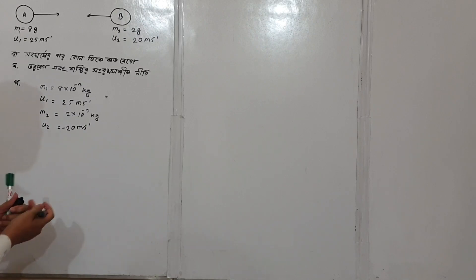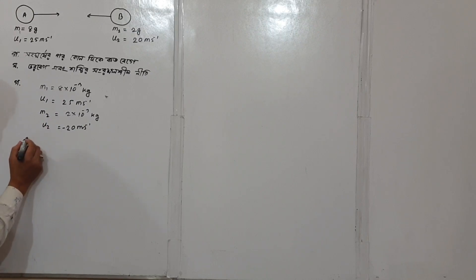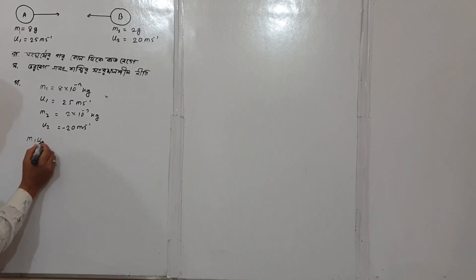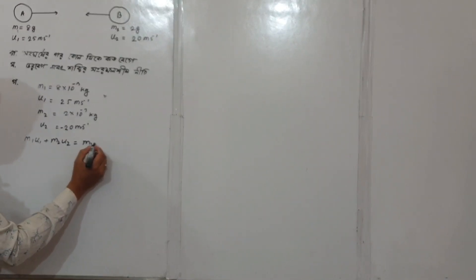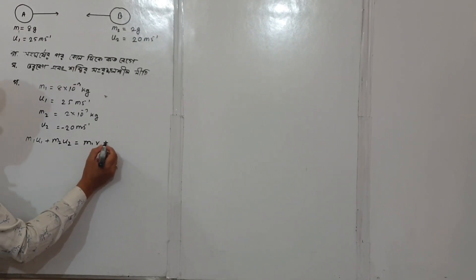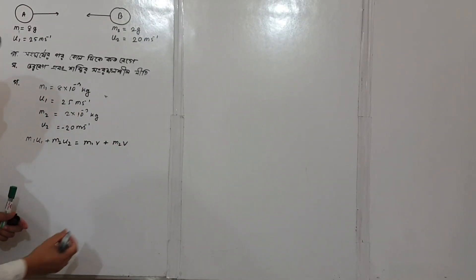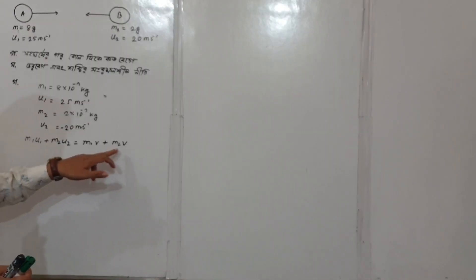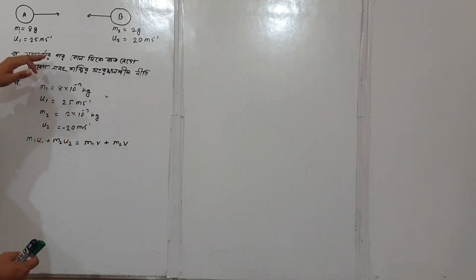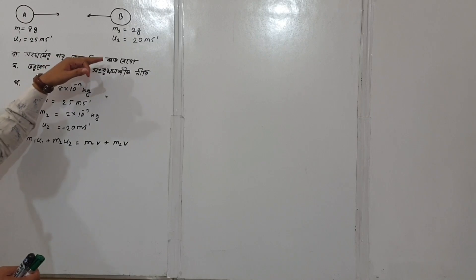We know that M1u1 plus M2u2 equals M1v1 plus M2v2. So we can see that M1v1 and M2v2, because we are applying the conservation of momentum formula.